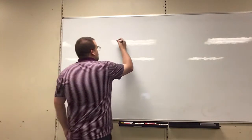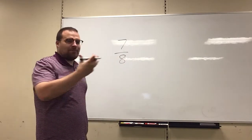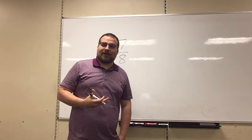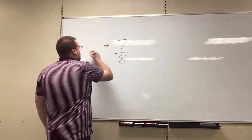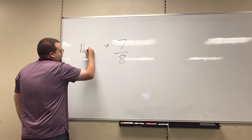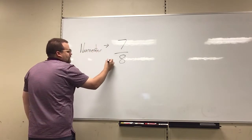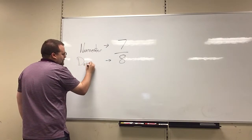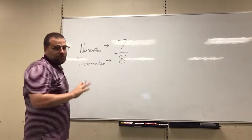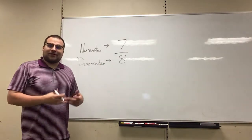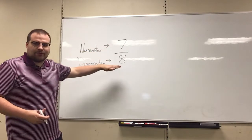So a fraction looks like this, 7 over 8. Now, the top part of the fraction and the bottom part of the fraction actually have specific names. And those names are numerator for the top and denominator for the bottom. Pardon my spelling if it's not great, but that's what we call them. The numerator up top, the denominator on the bottom.